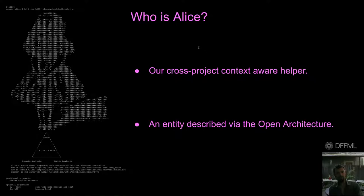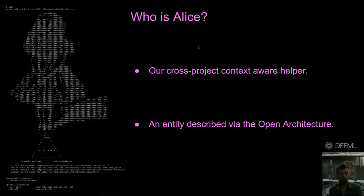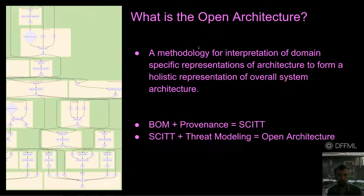So who is Alice? Alice is our developer helper and one day she'll be a developer herself. She helps us understand and perform various parts of the software development lifecycle. We currently extend her by writing simple Python functions which can be distributed or combined in a decentralized way. She's built around a programming language agnostic format known as the open architecture. Eventually we will be able to extend any part of her in any language or have parts be driven by machine learning models.